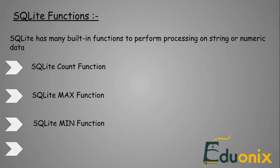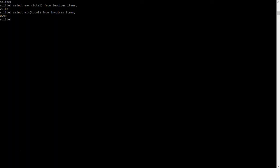Next is the SQLite MIN function. The MIN function does the opposite of the MAX function — it gives us the minimum value of a given column in a table. The minimum value of the column total in invoice_items is 0.99, whereas MAX was giving us the maximum value.